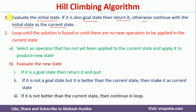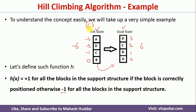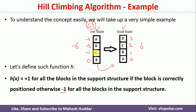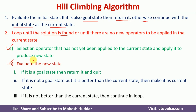The second step says we continue repeating steps A and B until the solution is found — meaning we reach the goal state — or until there are no new operators to apply to the current state. This is our current state; it is not a goal state and there are operators available, so we select an operator that has not yet been applied to the current state and apply it to produce a new state.